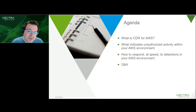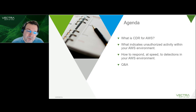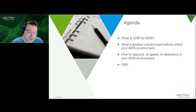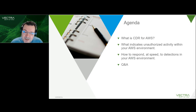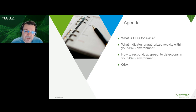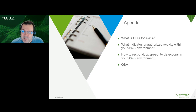We'll start today's webinar by talking about exactly what Vectra Cloud Detection and Response for AWS actually is. There are a number of screenshots of dashboards and layouts, which I'll move through relatively quickly so we have more time for the actual detection discussion. We'll then talk about which indicators and detections highlight potentially unauthorized access and privileged misuse, and finally we'll run through some examples of how you can respond at speed to them.